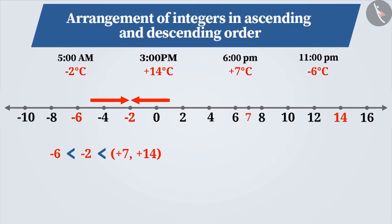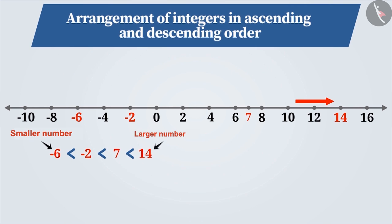So, we will write it after minus 6. Then comes plus 7, it is to the right of minus 6 and minus 2, hence it is larger than these two, but to the left of plus 14, hence it is smaller than 14. Since 14 is to the right of all these numbers, it is the largest. Hence, we write plus 14 after plus 7. We have now arranged the numbers in order.